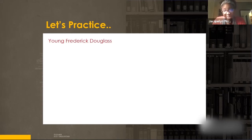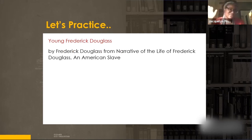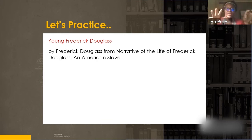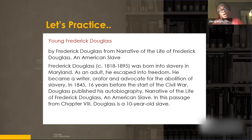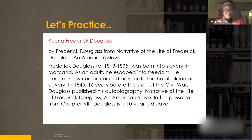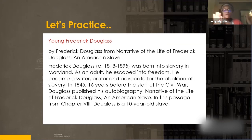We are going back to the Frederick Douglass narrative. Sometimes it's good to take the same text and look at it over and over from different perspectives - breaking it down and looking for different things. To review: this is from the Narrative of the Life of Frederick Douglass, An American Slave. Frederick Douglass, who lived 1818-1895, was born into slavery in Maryland, escaped to freedom as an adult, became a writer and orator, and advocated for the abolition of slavery.